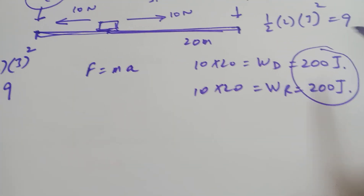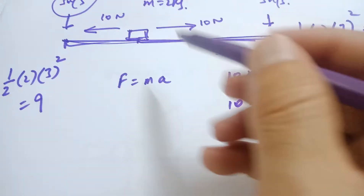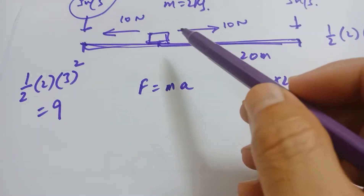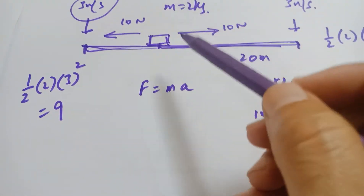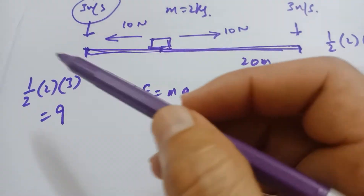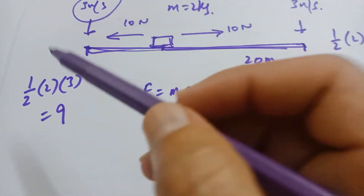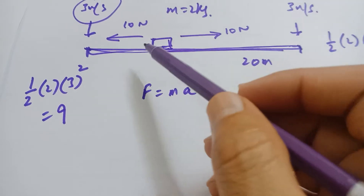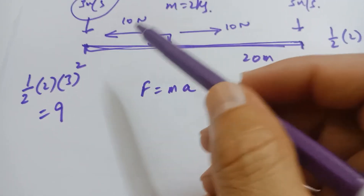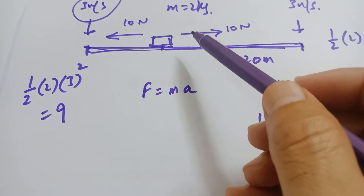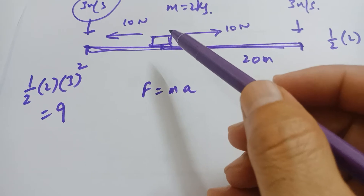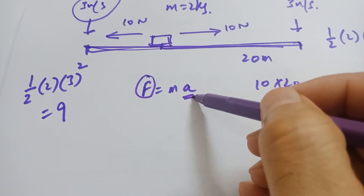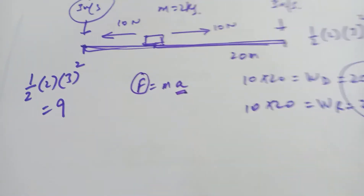So I have discussed the situation where the object is moving with constant speed. This relates to what we have previously done: constant speed means the object is in an equilibrium state. In an equilibrium state, the resultant of the forces is zero, and therefore the acceleration is zero.